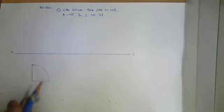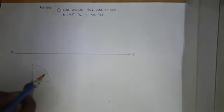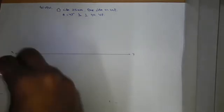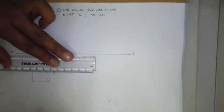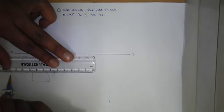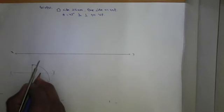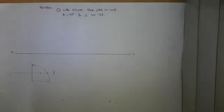Now draw the perpendicular bisector of this line, and similarly here. Join these points. Now this is point 4 and this is point 6. Now we need to make point 5, which will allow us to complete the pentagon.